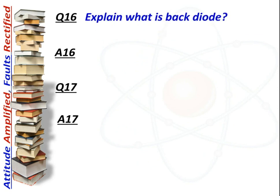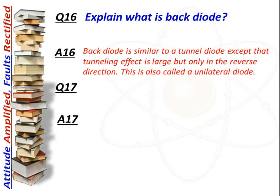Next question: What is a back diode? Answer: A back diode is similar to a tunnel diode except that the tunneling effect is large but only in the reverse direction. It is also called a unidirectional or unilateral diode.